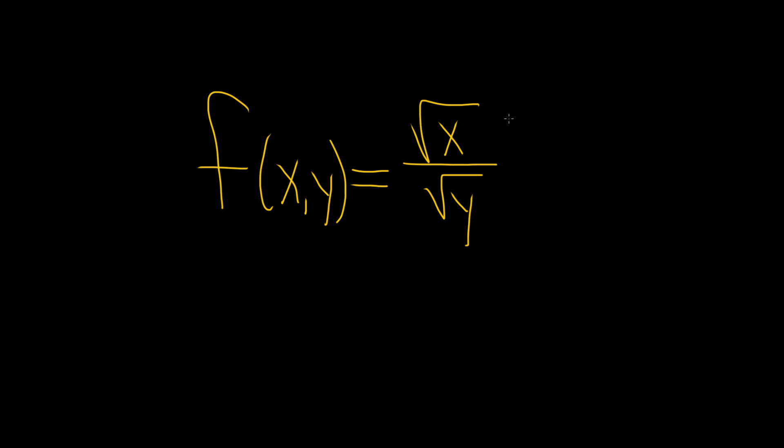In the numerator, we have the square root of x. You cannot take the square root of a negative number, so x has to be 0 or positive. Therefore, x must be greater than or equal to 0 for this expression to make sense.